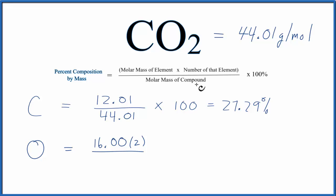And then divide by the molar mass of the compound, which we found to be 44.01. Multiply that by 100, and we get 72.71%. So this is the percent composition of the oxygen in the CO2.